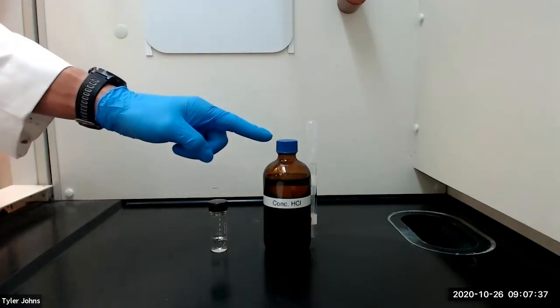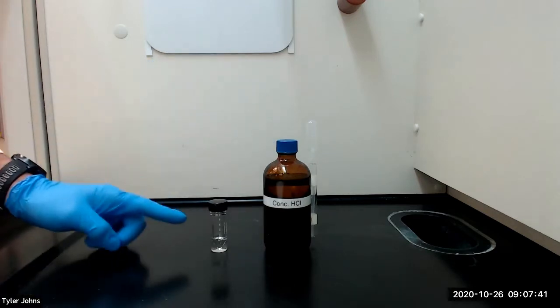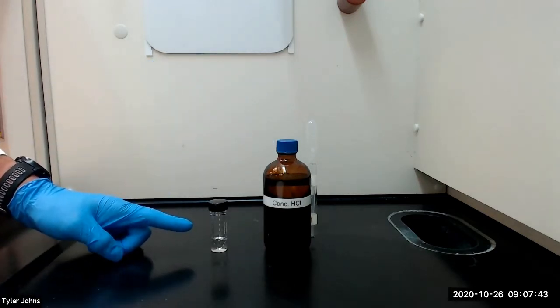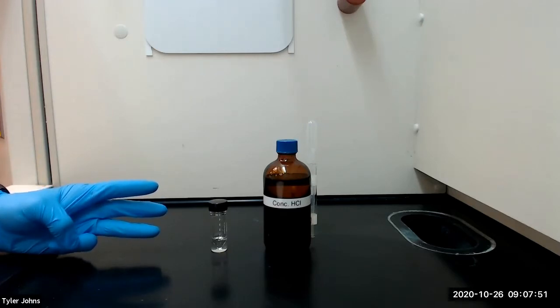We will next add 2.5ml of concentrated hydrochloric acid to our 5ml conical vial with the T-pentyl alcohol and shake for 1 minute. We will then vent the vial and recap and shake for an additional 3 minutes, venting occasionally.